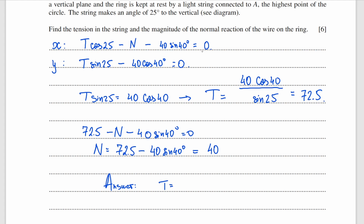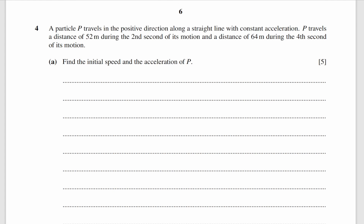So tension equals 72.5 newtons and the normal reaction is 40 newtons. The next question is about SUVAT equations. I got a straight line with t equals 0, 1, 2, 3, and 4.